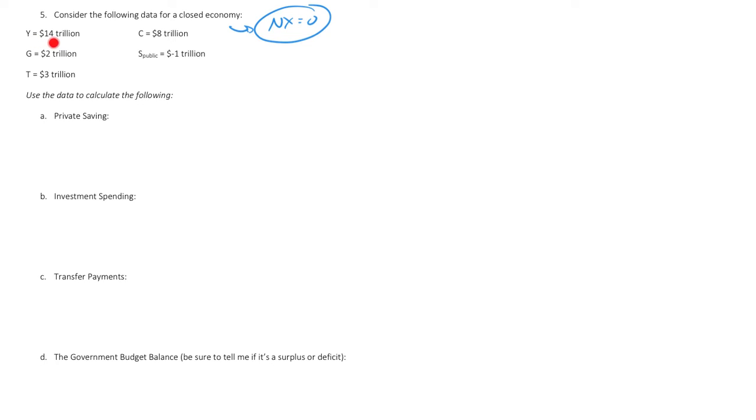Let's see. We have Y, which is our GDP, $14 trillion. G is government purchases at $2 trillion. T, we've got $3 trillion. So T is taxes. C is consumption at $8 trillion. And public savings at negative $1 trillion.